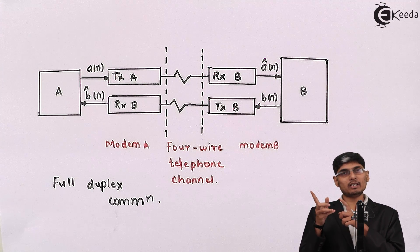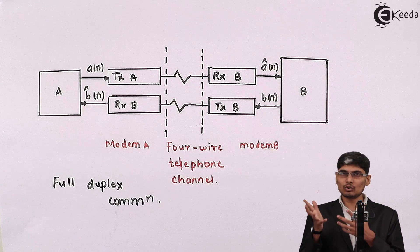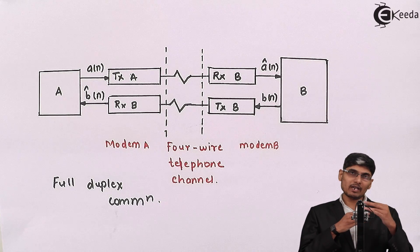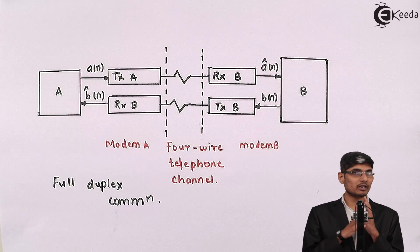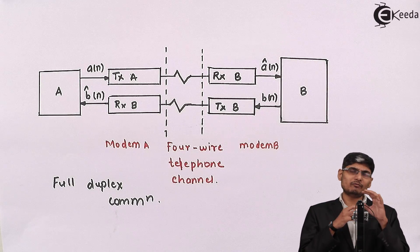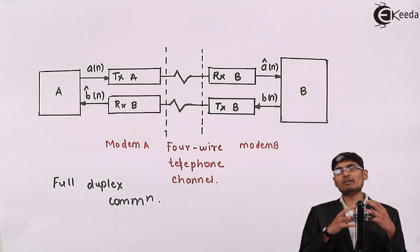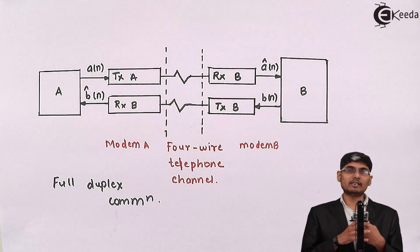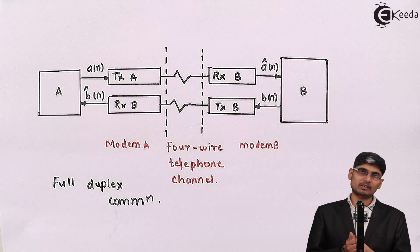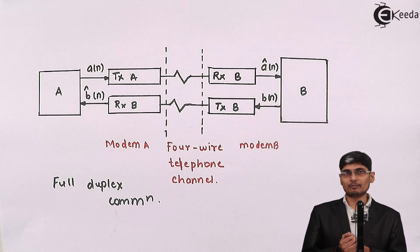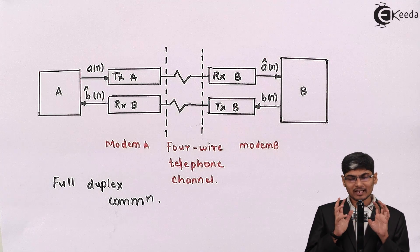When we have two channels for transmission and two channels for reception, it is a very good scenario because we have dedicated channels assigned for transmission and reception. So there will not be any overlay of the signals or any interference of the signal. There will be no crosstalk in this scenario.